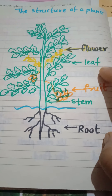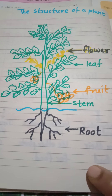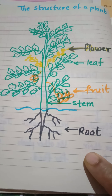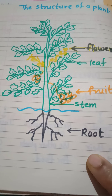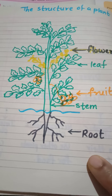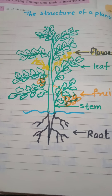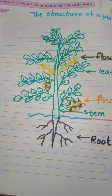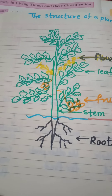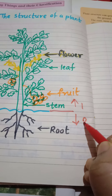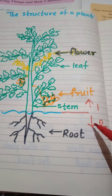We are also going to study different types of leaves and different types of roots. The tree or plant structure is generally divided into two parts: the part which is above the ground, and the part which is below the ground.